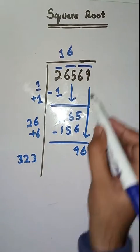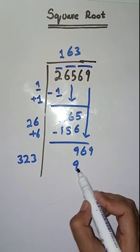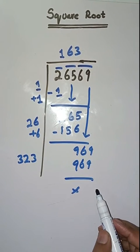So you can see, resolve ho chuka hai. So square root of 26,569 is 163.